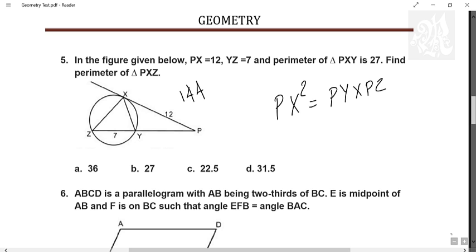So 144 is something into the entire thing. And that something into the entire thing differ by 7. Because in the first case is X. And in the later case is X plus 7. So it is going to be 16 and 9. So this is 9. 9 into 16. Clear? Perimeter. Now the perimeter of PXY is 27. PX you know. PY you know. You will find XY. 6.